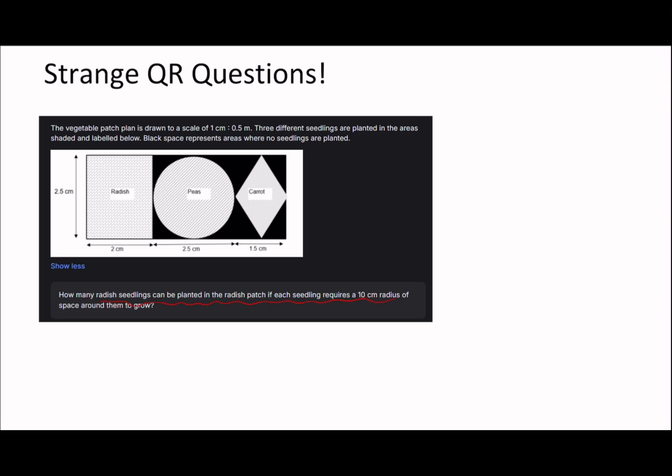How many radish seedlings can be planted in the radish patch if each seedling requires a 10cm radius of space to grow around them? The radish patch is here and it says 2.5cm to 2cm, but that doesn't make sense because it requires a 10cm radius. So we read the abstract and it says 1cm is 0.5m. That means when we're drawing our diagram, the 2.5cm and 2cm are actually scaled, not scaled up. So that's our job, we have to first scale them up.